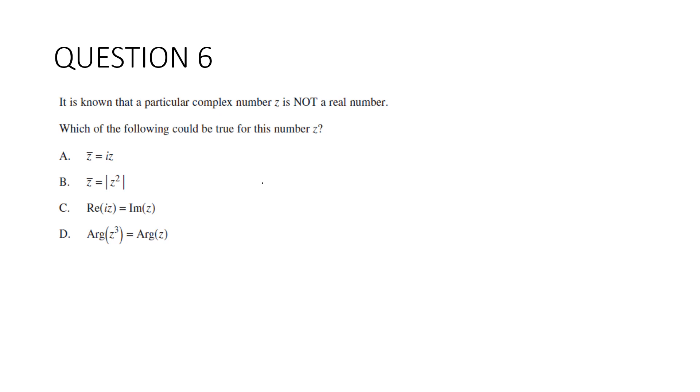Question 6. It is known that a particular complex number z is not a real number. So y is not equal to zero. Which of the following could be true for this number z? We're going to have to go through all of them. So conjugate of z is x - iy, and iz equals ix - y, which equals -y + ix. Could we have a situation where x equals -y, and -y equals x?